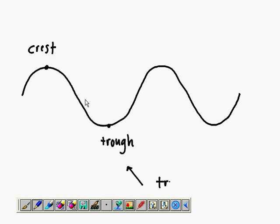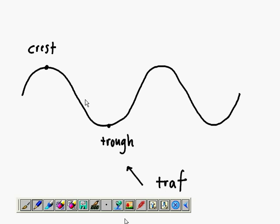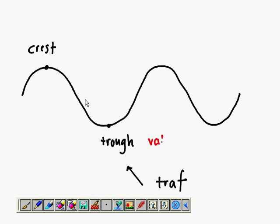The highest point is the crest, the lowest point is the trough. We can also call the highest point the peak and the lowest the valley. The distance from the highest point to the highest point, A to B.